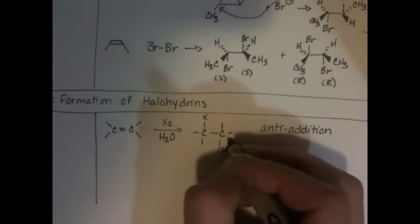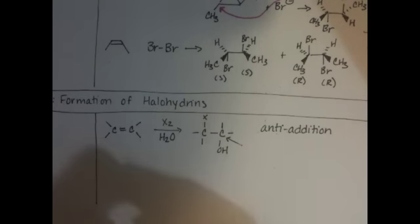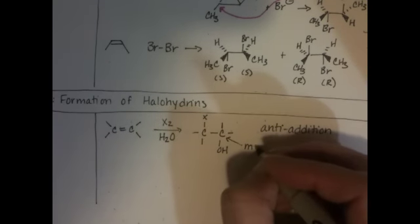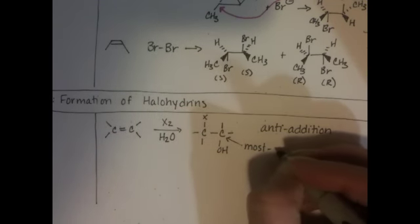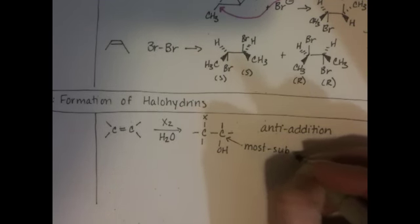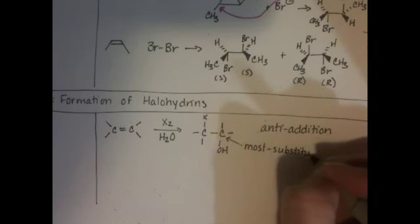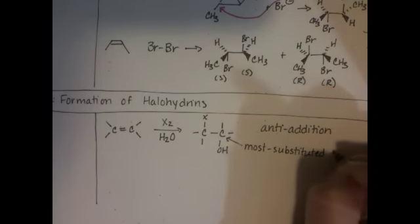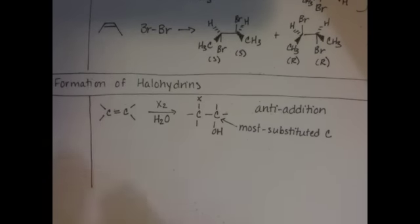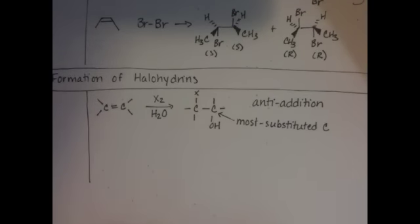This carbon right here in the product is the most substituted carbon. It's said to be a Markovnikov addition, but that doesn't make a whole lot of sense if you know the Markovnikov rule in terms of hydrogen. So the OH group ends up going on the most substituted carbon, just like a Markovnikov reaction to produce an alcohol would.